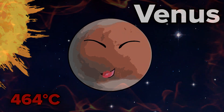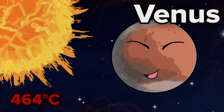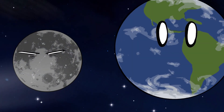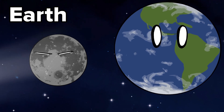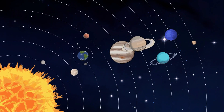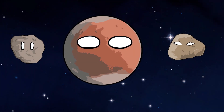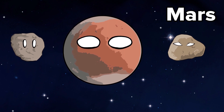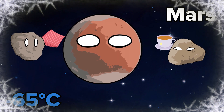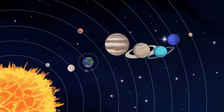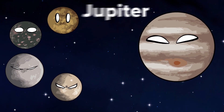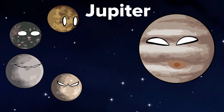Earth: the average temperature on the surface of the Earth is 14 degrees Celsius. Mars: the temperature on the surface of Mars is minus 65 degrees Celsius. Jupiter: the temperature on the surface of Jupiter is minus 238 degrees Celsius.